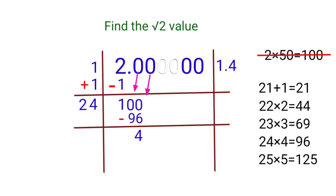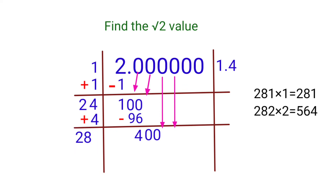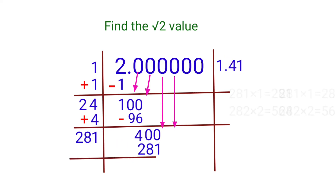Now bring down the next 2 zeros, giving us 400. Double the last divisor digit: 4+4=8, so the new trial divisor starts with 28. We try: 281×1=281 which is less than 400, and 282×2=564 which is greater than 400. So we take 281. Write 1 in the quotient, 281 as the divisor, subtract to get 400 − 281 = 119.